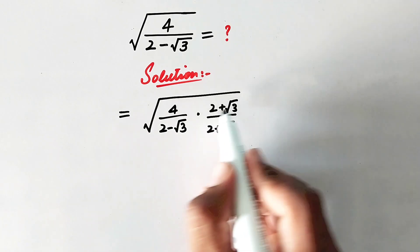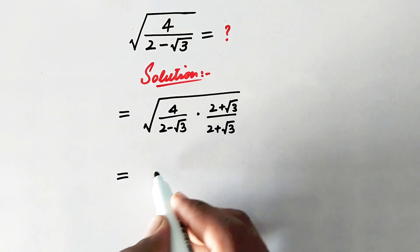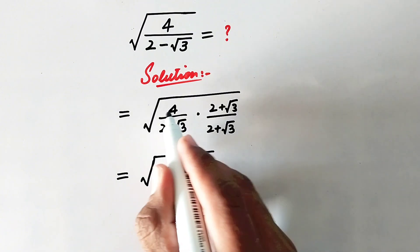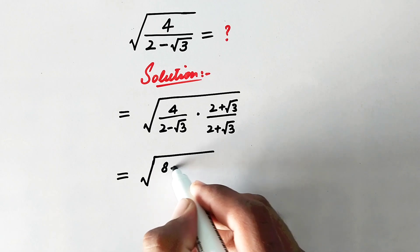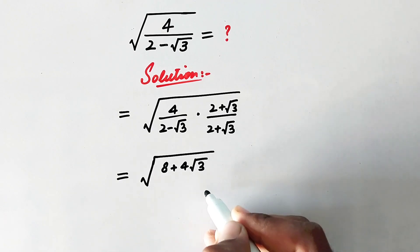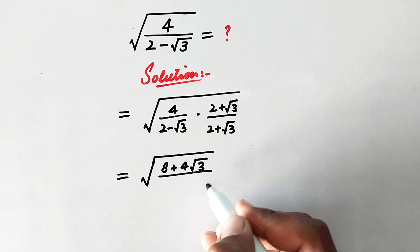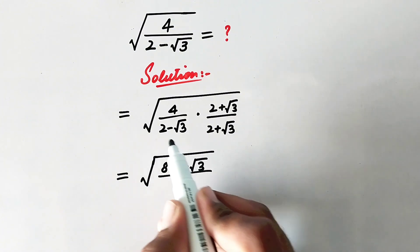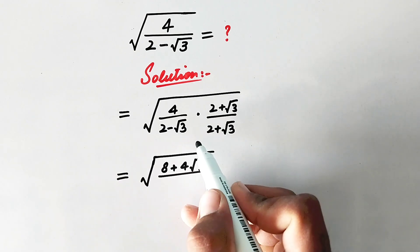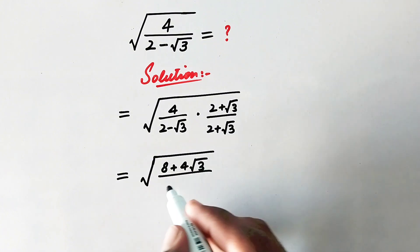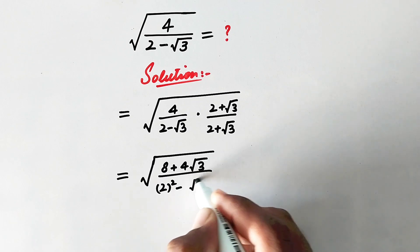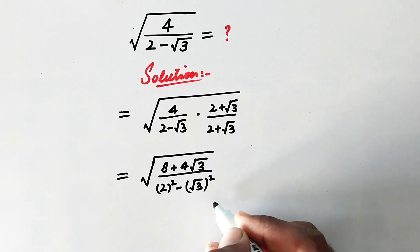By multiplying we will get square root of 4 times 2 is 8, plus 4 times square root of 3, divided by — here we can apply an algebraic formula: a minus b into a plus b equals a squared minus b squared. So we may write it as 2 squared minus square root of 3 squared.